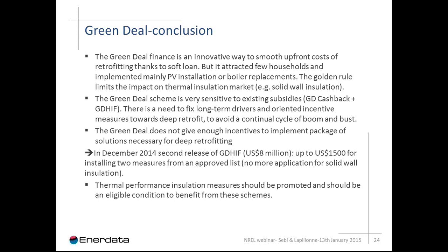The ECO was supposed to fund measures that do not meet the golden rule, and 35% of measures concern cavity wall insulation. However, compared to the previous Carbon Emission Reduction Target scheme, insulation activity has decreased over time. The Green Deal Home Improvement Fund targeted mainly solid wall insulation with higher cashback, but it collapsed immediately, with only about 8,800 households applying. As a conclusion, the Green Deal was designed to smooth upfront costs through its loan, but it attracted few households who implemented mainly PV installation and boiler replacement. The golden rule limits impact on the thermal insulation market. The Green Deal is very sensitive to subsidies — there is a need to fix long-term drivers and orient incentive measures toward deep retrofit to avoid a continual cycle of boom and bust. The scheme does not give enough incentive to implement a package of solutions needed to achieve cost optimality. As a response, the UK government offered a second release of the Green Deal Home Improvement Fund in December 2014, requiring households to implement at least two measures to benefit from the grant.